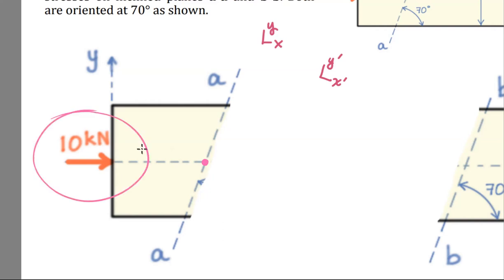Put a little dot there at the centroid of cut plane AA. I need to put my free body in equilibrium. So let's push a 10 kilonewton force in the negative X direction for global equilibrium.